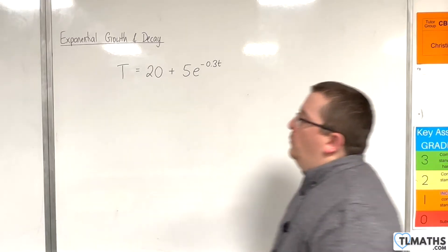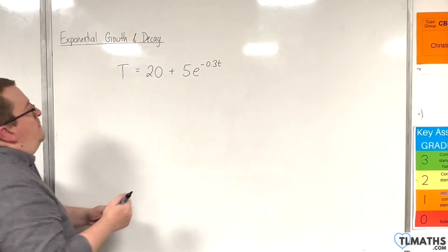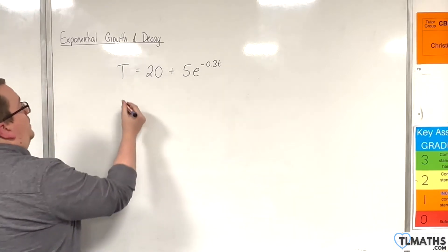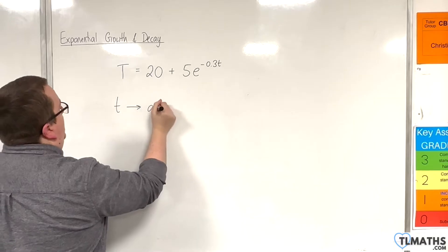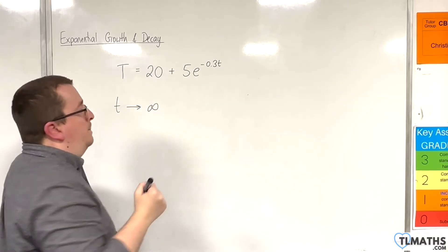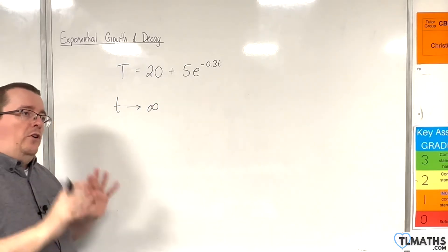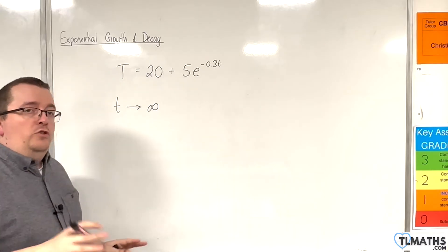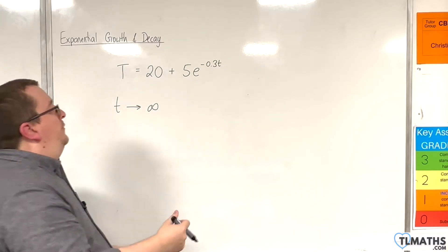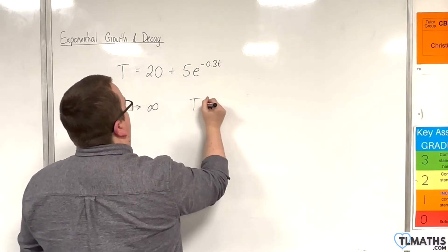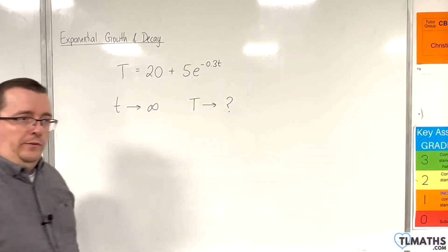When I talk about long-term behaviour, I'm actually thinking about what happens as t tends to infinity. So as time goes on and gets larger and larger, what happens to the temperature? What does it tend towards?